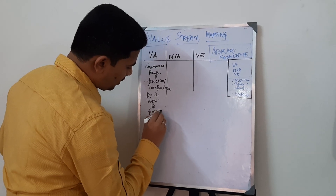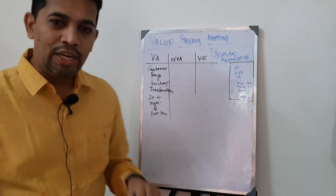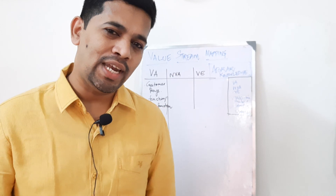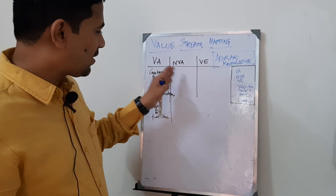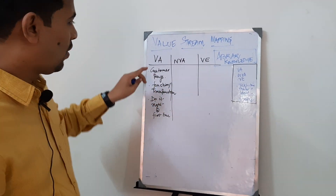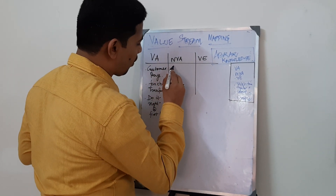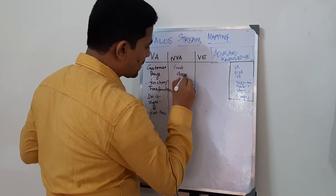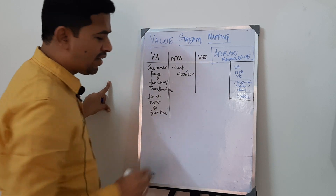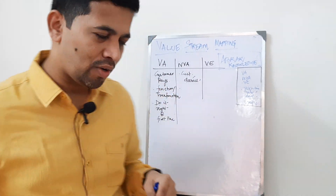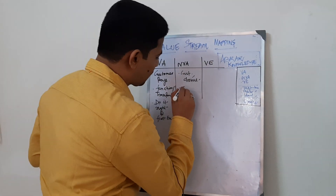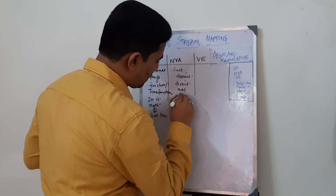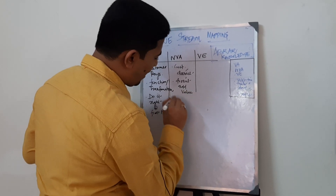So these are the three things. Anything which falls under this category, we need to tag them in value stream mapping. Let us explore what is non-value added. Non-value added is the opposite of this. So the customer doesn't pay for it, and it doesn't add any transformation or value to the process.